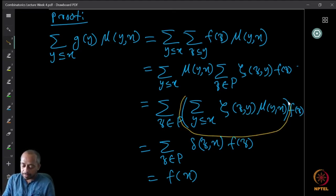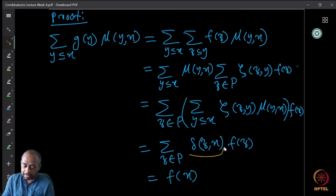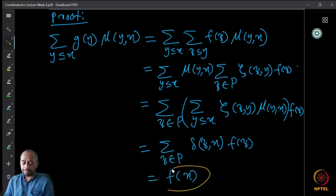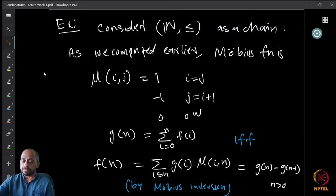The inner sum is a convolution product, and since ζ and μ are inverses of each other, it becomes δ(z, x). Therefore we get Σ_{z ∈ P} δ(z, x)·f(z), and since δ is precisely 1 when z = x and 0 otherwise, the only surviving term is f(x). Since all these steps are reversible, the proof is complete.